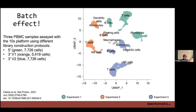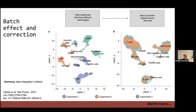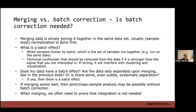This example is from our Nature Protocol. There's a 10x platform with five-prime, three-prime, and two versions of three-prime, and there's a pretty strong batch effect between these technology choices. Fortunately, batch correction exists as a method and we can go from cells being separated into three different technologies on the UMAP to everything being nicely organized by cell type. The particular batch correction method applied here is Harmony, and we were able to fix this problem.